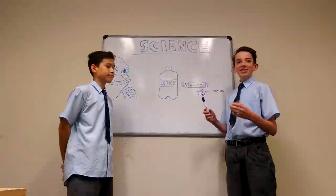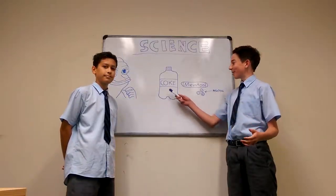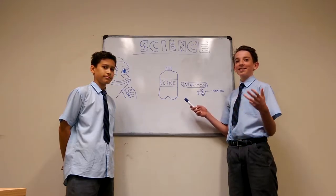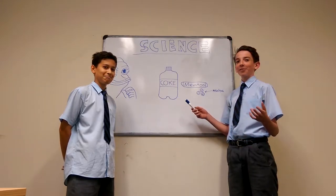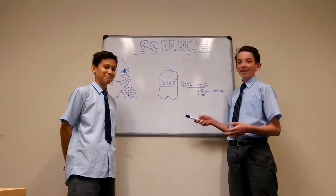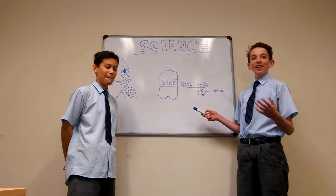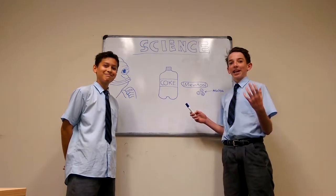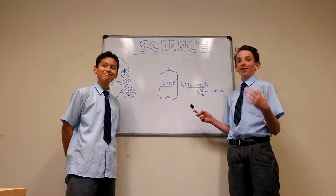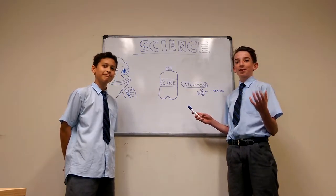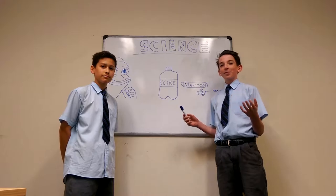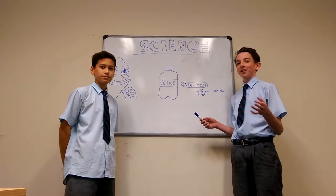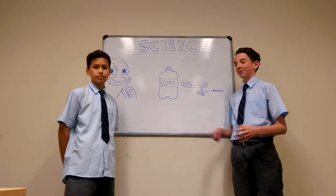As you can see, all the carbon dioxide in the coke — all that fizz — is squeezed into the liquid and looking for a way out. It is drawn to any tiny bumps that it can grab onto. Those tiny bumps are called nucleation sites, which are places the gas can grab onto and start forming bubbles.